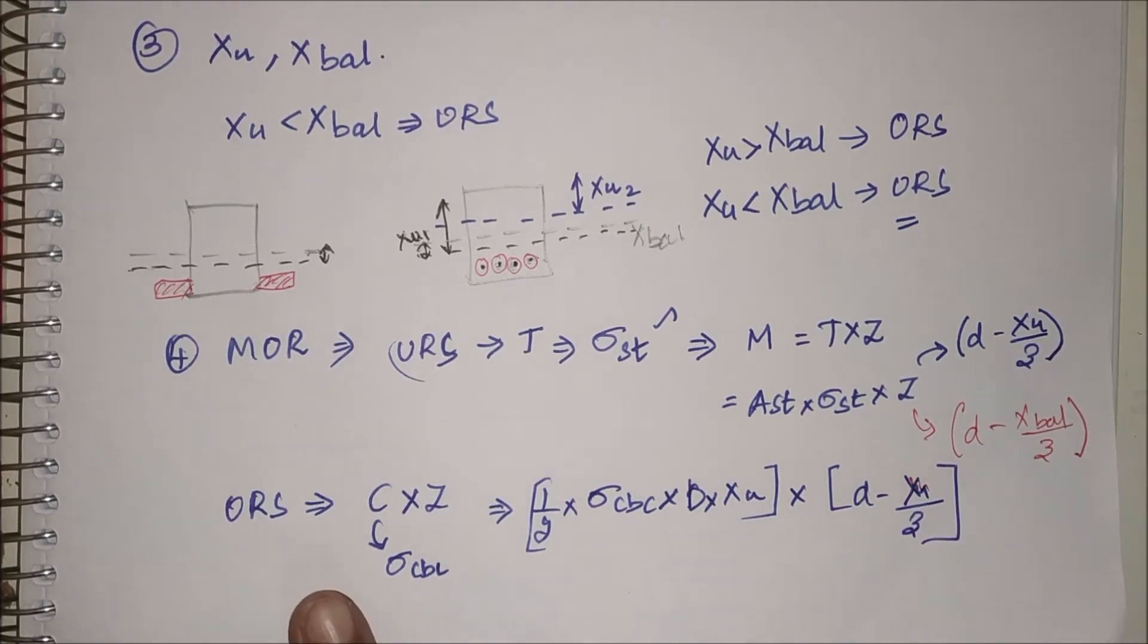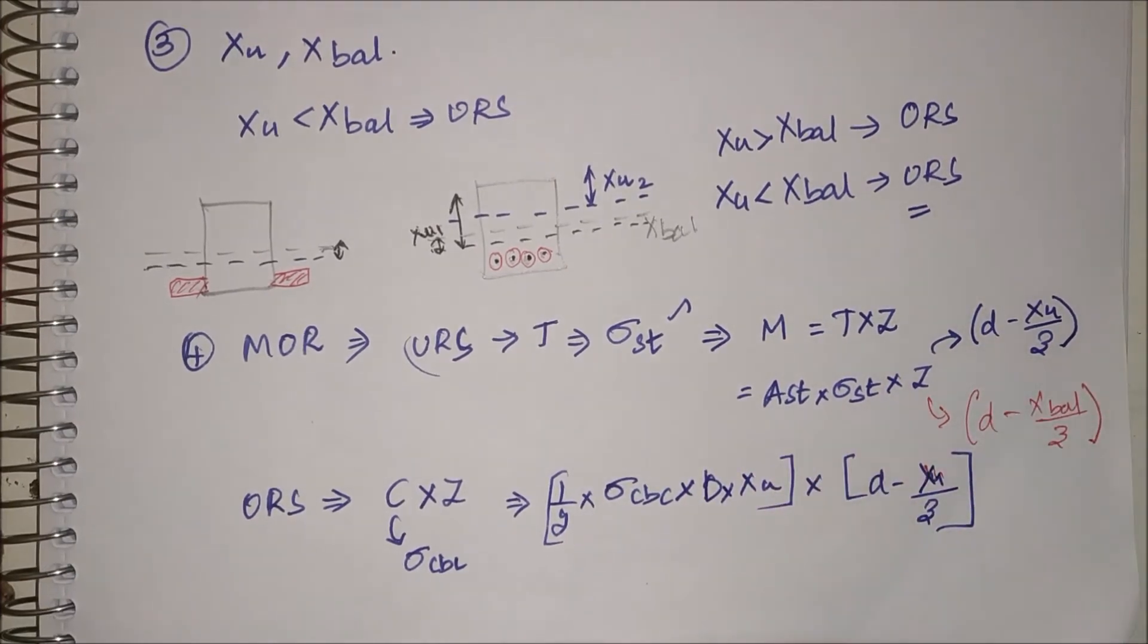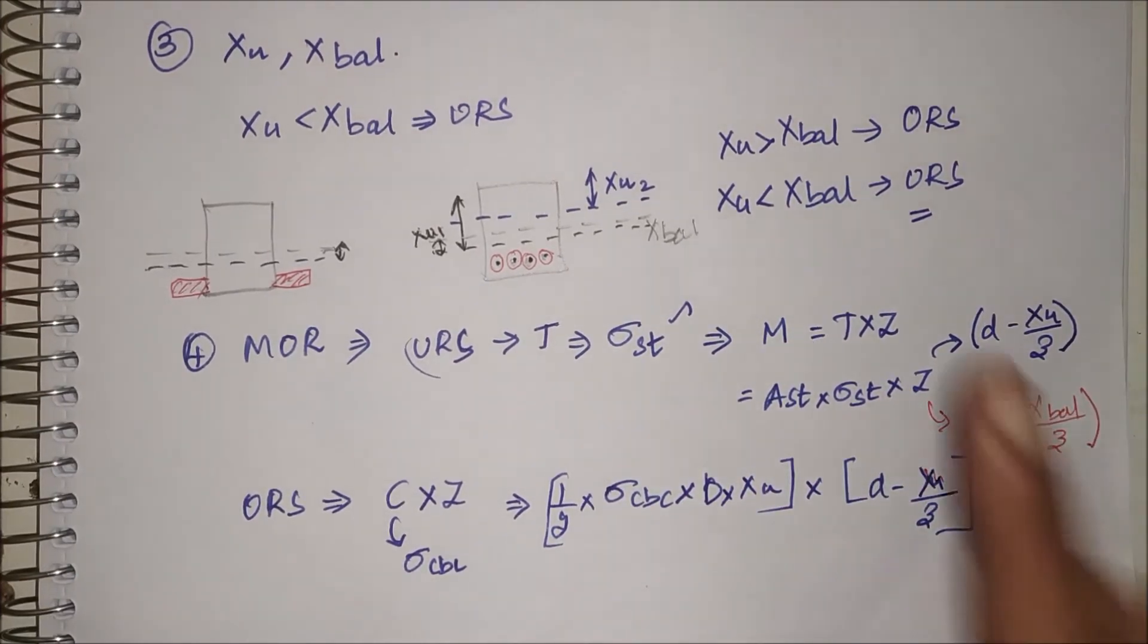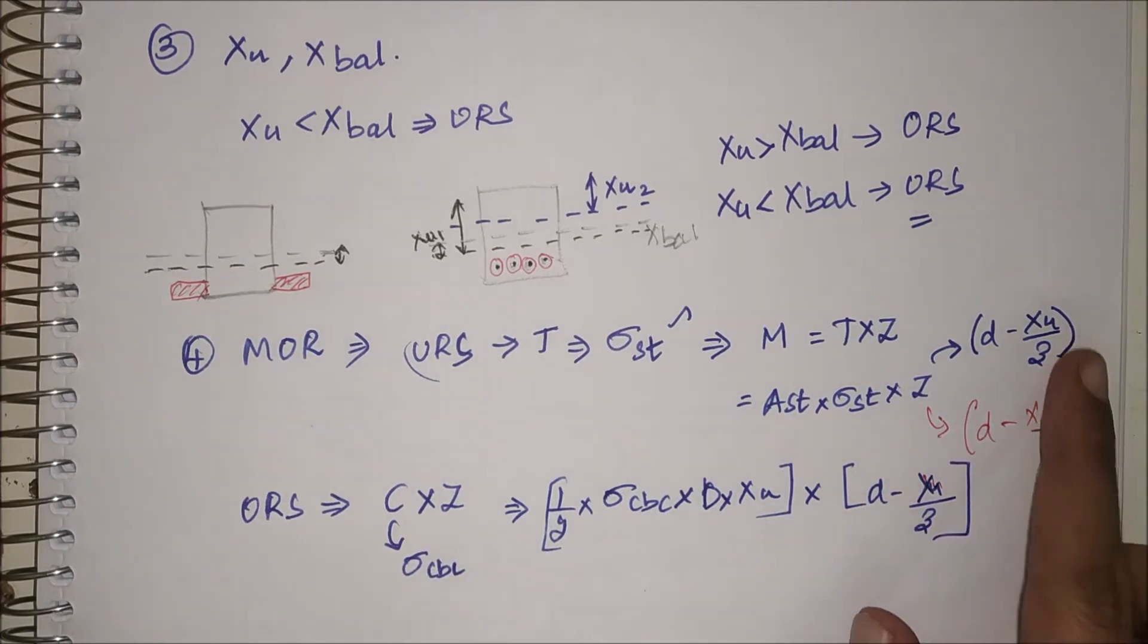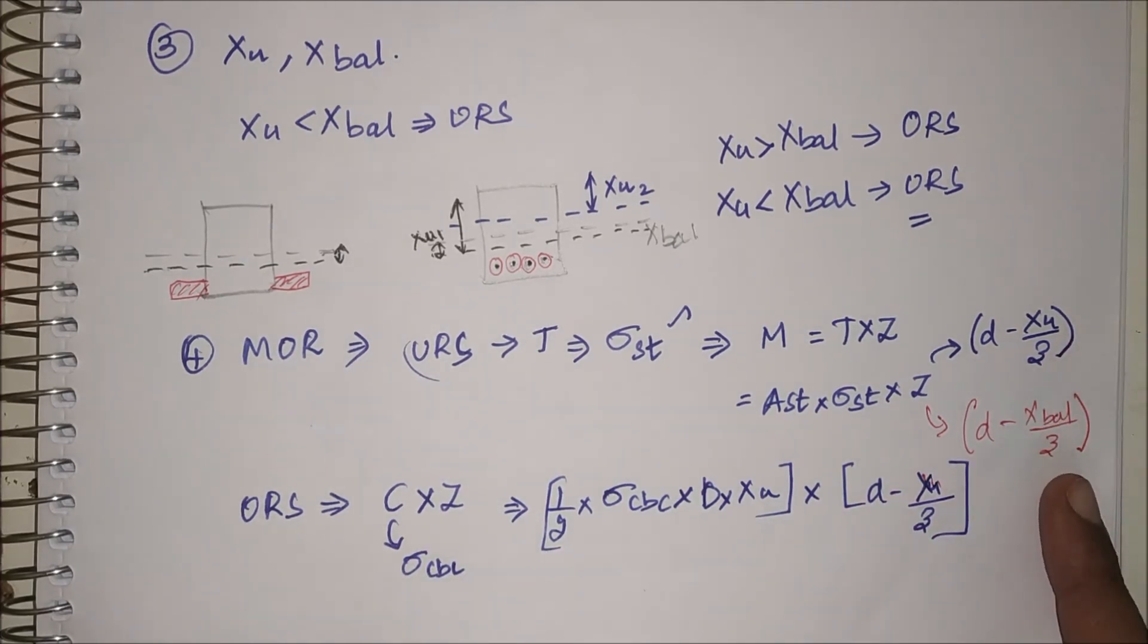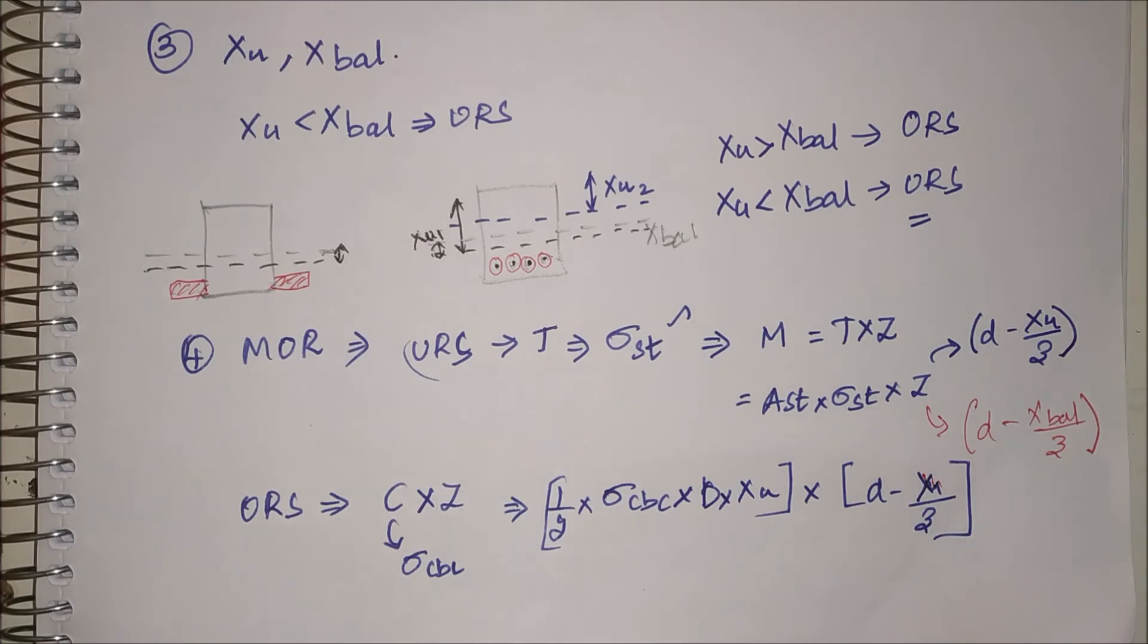You will be able to find moment of resistance. If it had been a balanced section, you can either use C into Z or T into Z. In that case, your Xu will be replaced by X balance. This is how we will find the moment of resistance in working stress method.